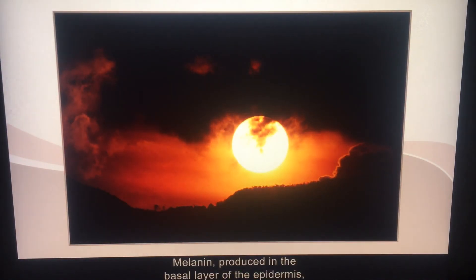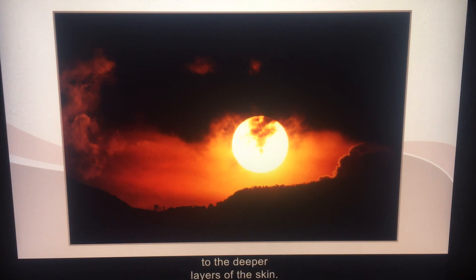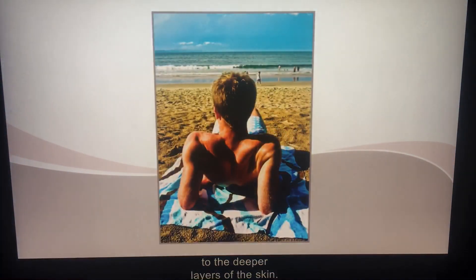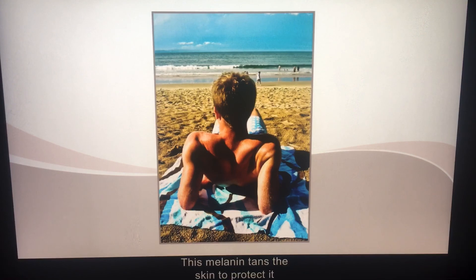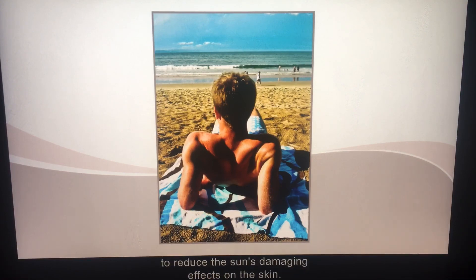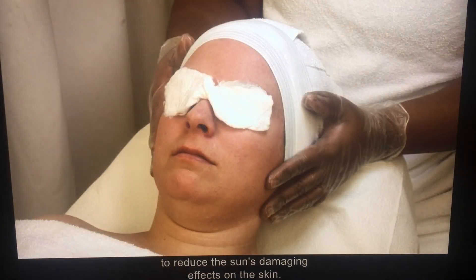Melanin, produced in the basal layer of the epidermis, protects the skin from the penetration of ultraviolet rays to the deeper layers of the skin. This melanin tans the skin to protect it from the burning rays of the sun. See your textbook for tips on how to reduce the sun's damaging effects on the skin.